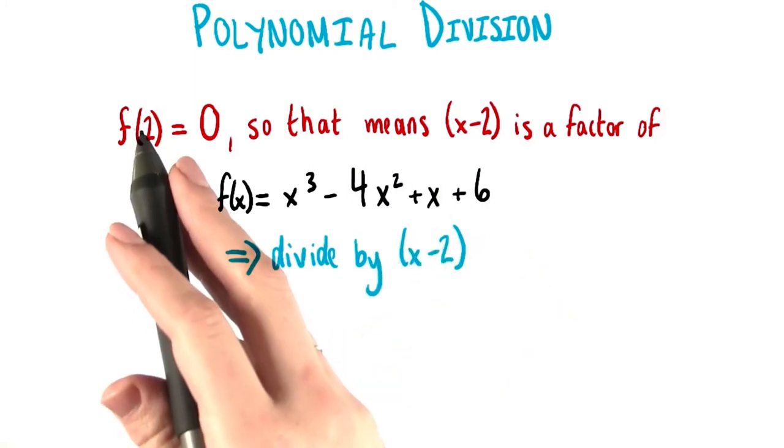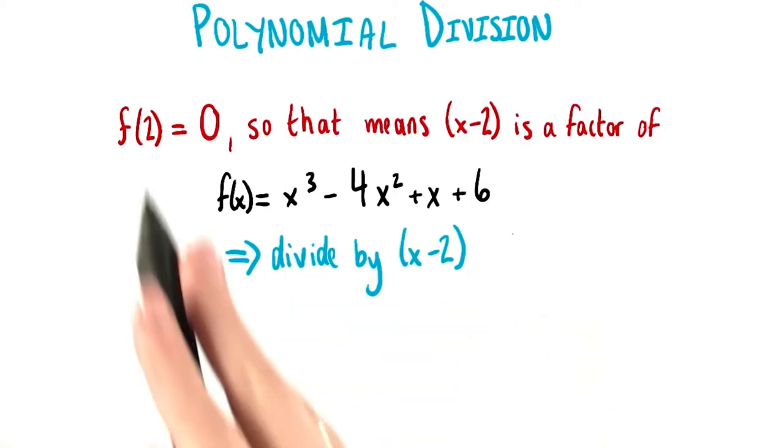We had found that 2 is a zero of this function, since when we substitute it in, the entire function comes to equal 0.